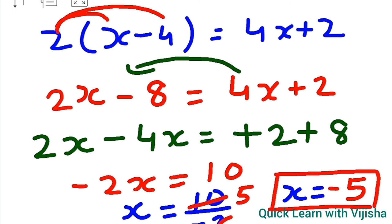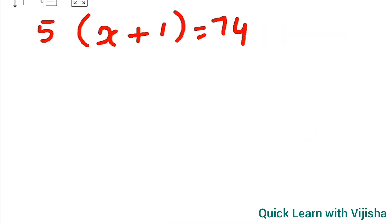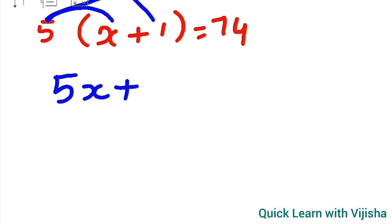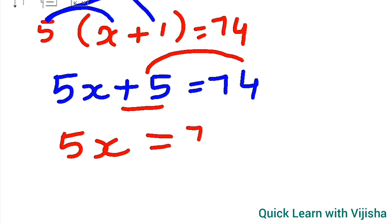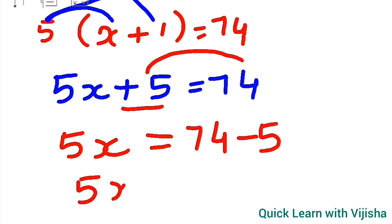The last question, number 6, is 5(x plus 1) equals 74. We open the bracket: 5 times x gives 5x and 5 times 1 gives 5, so 5x plus 5 equals 74. We take plus 5 to the right side as minus 5, giving 5x equals 74 minus 5, which is 69.